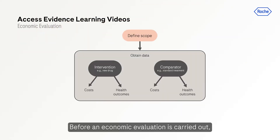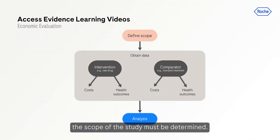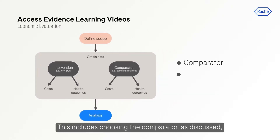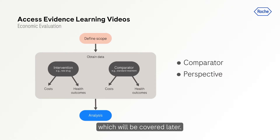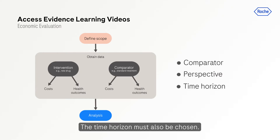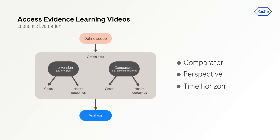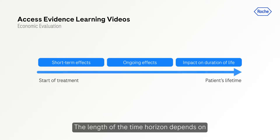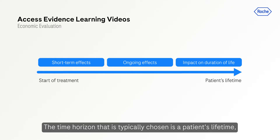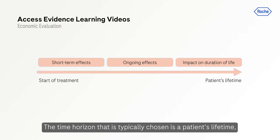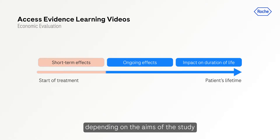Before an economic evaluation is carried out, the scope of the study must be determined. This includes choosing the comparator, as discussed, and the perspective for the evaluation, which will be covered later. The time horizon must also be chosen — this specifies the period over which costs and outcomes are considered. The length of the time horizon depends on when the effects or side effects of an intervention occur.